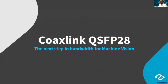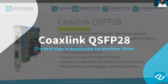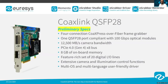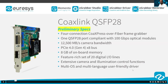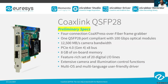Now I would like to introduce the next step in bandwidth for machine vision: the Coaxlink QSFP28. These are the preliminary specs of this new board. The Coaxlink QSFP28 is equipped with a QSFP28 port compliant with 100G optical modules. It can provide up to 12.5 gigabytes per second of camera bandwidth, and has a PCIe Gen4 x8 interface with 8 gigabytes of on-board memory for frame buffering.